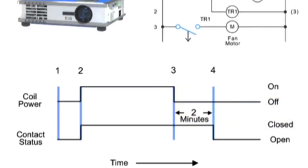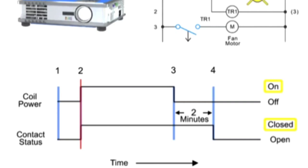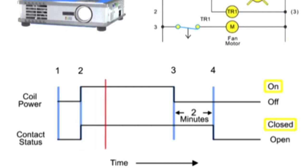Let's look at a common application of a normally open, timed open relay in the operation of a video projector. In this circuit, closing switch S1 turns on the projector bulb and activates timer coil TR1. With timer TR1 energized, normally open contact TR1 immediately closes, energizing the fan motor which controls the cooling of the projector. The projector bulb and the cooling fan remain on as long as switch S1 stays closed.